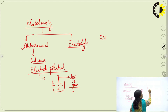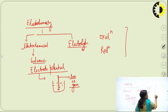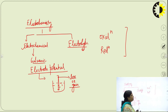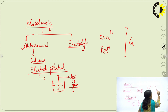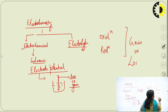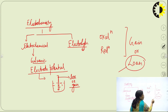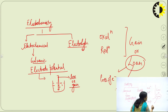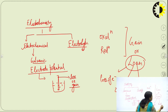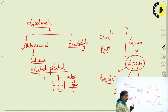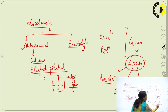To remember oxidation and reduction — where gain or loss of electrons occurs — simply learn the word LOAN. L-O stands for Loss Of electron, O is Oxidation, and AN is Anode. So the chemical reaction where there is loss of electrons is called oxidation, and oxidation always occurs at the anode.